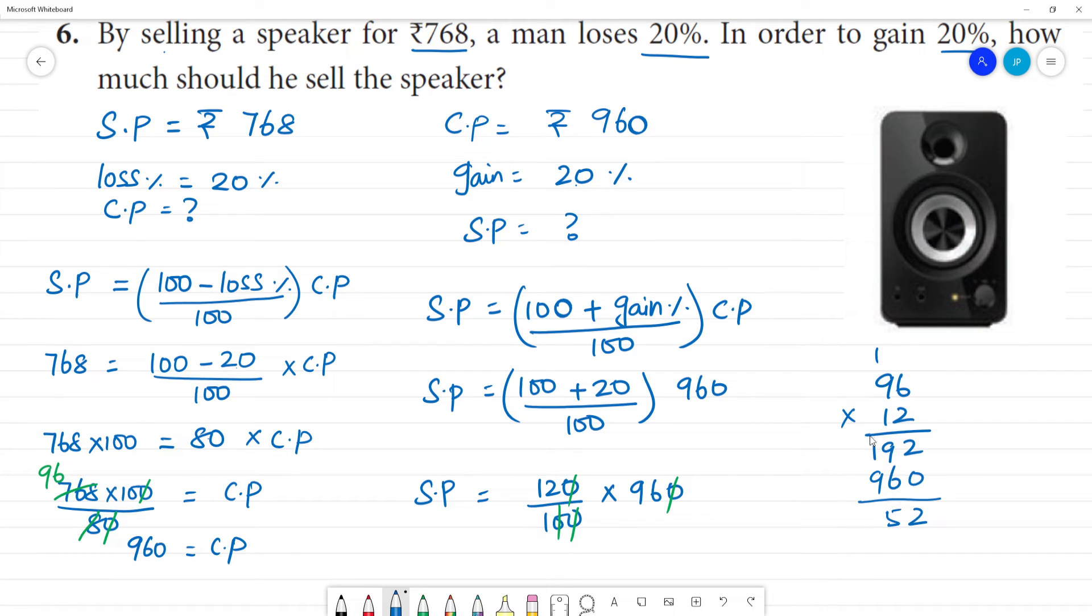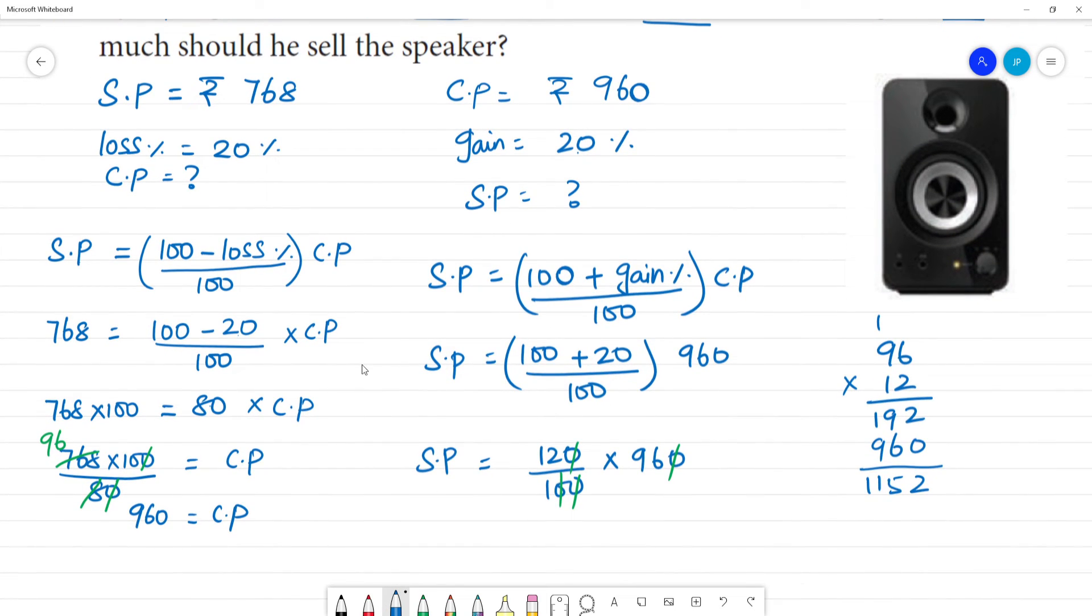So what is the selling price? Selling price is equal to rupees 1152. So this is the cost price. The cost price is 960.